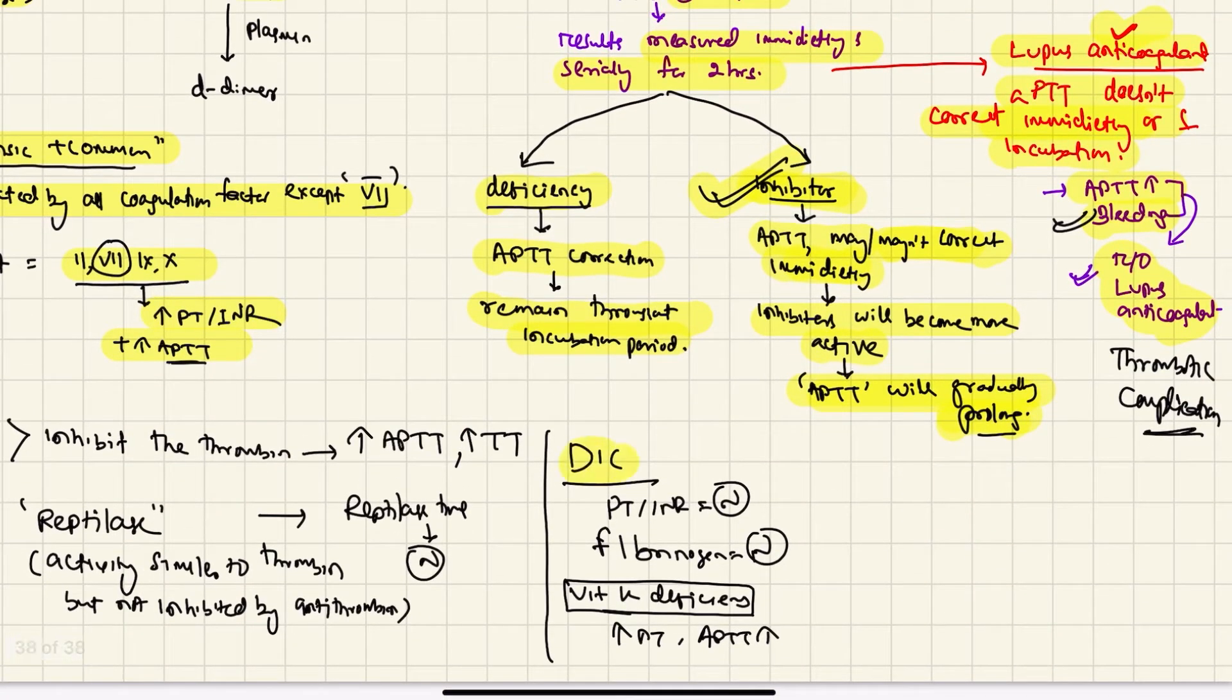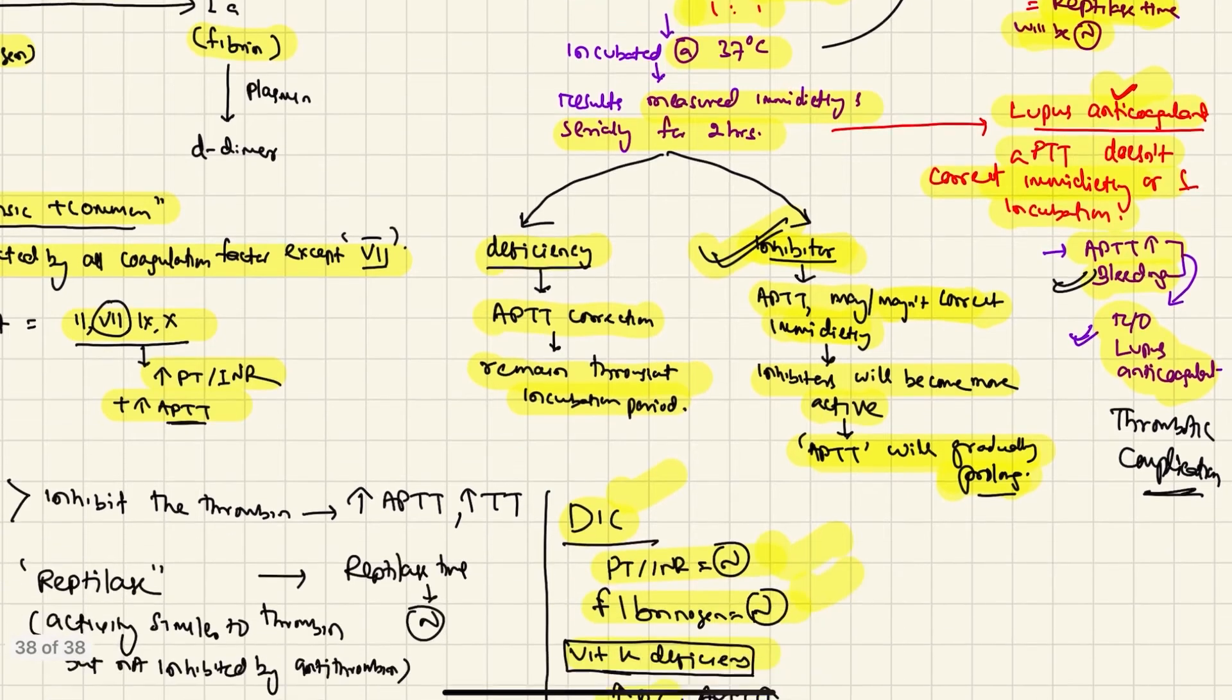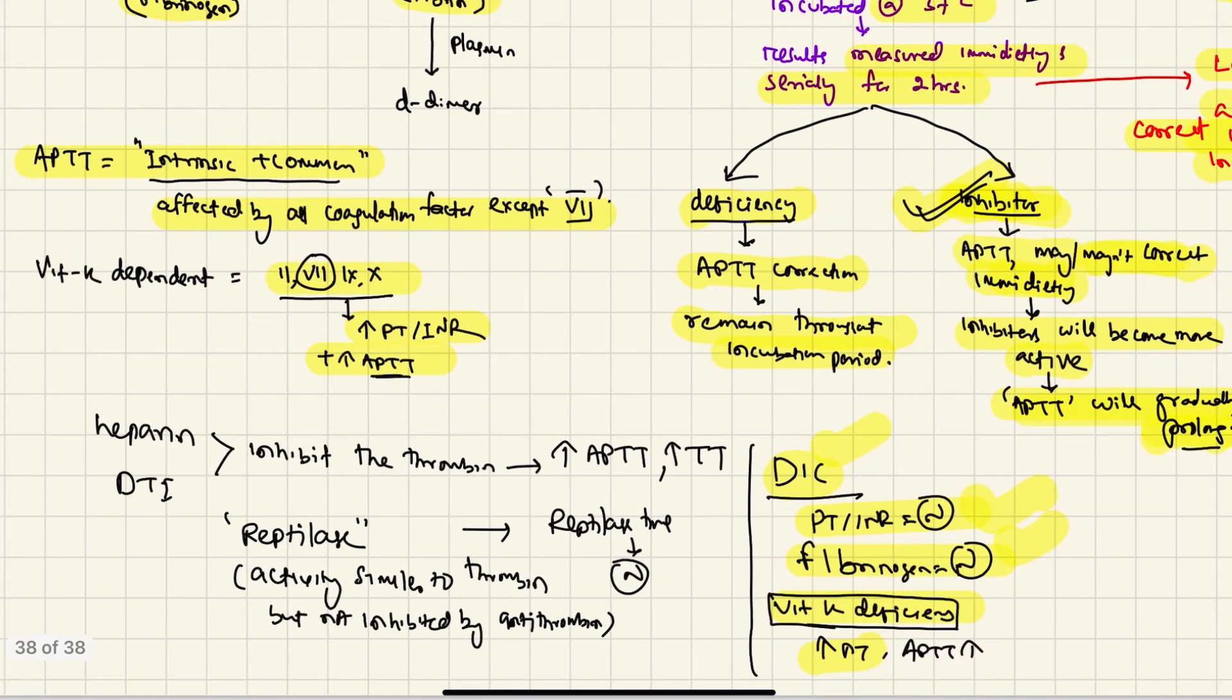So this rules out any heparin or direct thrombin inhibitor. Of course the patient is not having any DIC, because in DIC PT/INR will be elevated and fibrinogen will be less. In our case both are normal, so there is definitely no DIC. In case of vitamin K deficiency, the PT will also increase, which is not in our case. So there is no vitamin K deficiency, no DIC, no lupus anticoagulant, no heparin, but definitely person is having some inhibitor.